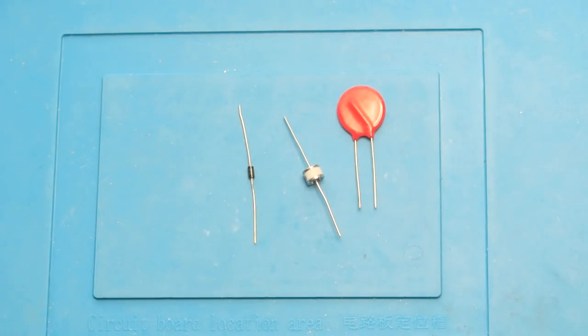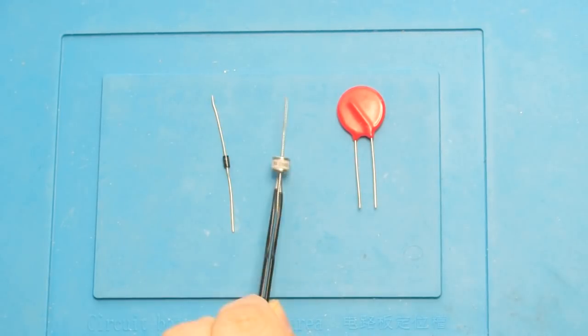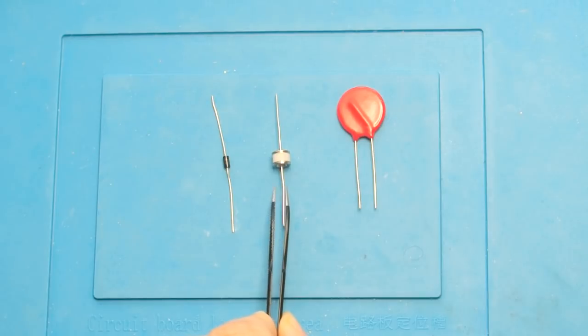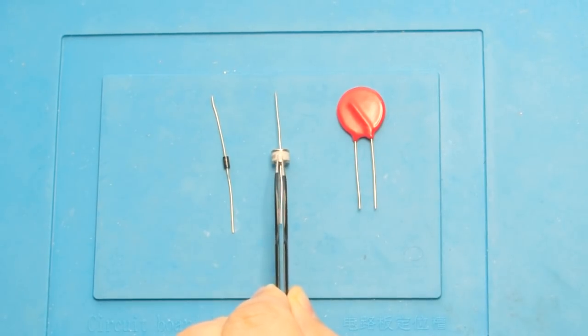In this video we're going to look at how to build our own protection devices. Commercially, there are three predominant devices used. First is a gas discharge tube, basically a spark gap inside a capsule of inert gas.